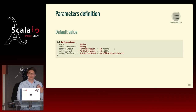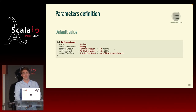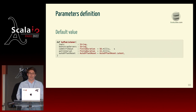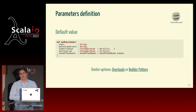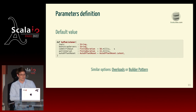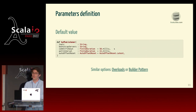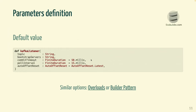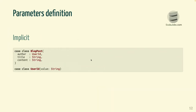Default values are good when the person who implements the function knows that some values are much more common. We could also use overloads or the builder pattern — this is essentially the same thing. Now let's go into the core of this presentation and talk about implicit.